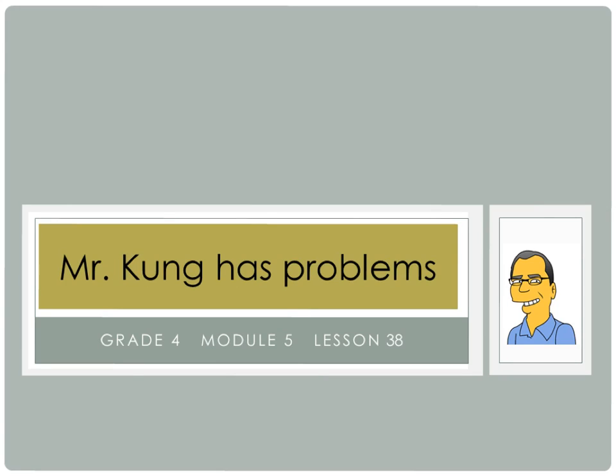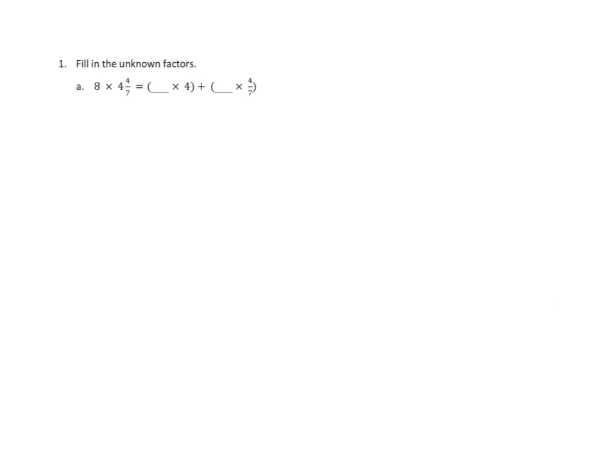Hello, and welcome to another episode of Mr. Kung Has Problems. Tonight we are working on Module 5, Lesson Number 38. In tonight's lesson, we are going to be finding the product of a whole number and a mixed number using the distributive property. We've been working on this a little bit in the last few days, and we're going to extend our reasoning today to slightly more complicated problems than we've had before. So let's take a look at a few problems, maybe three of them from tonight.